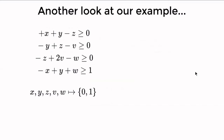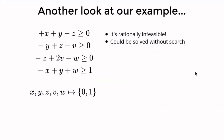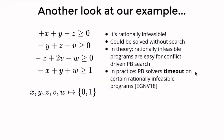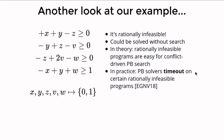The example is not only unsatisfiable over zero-one, but it also does not allow rational solutions. If one were to run an LP solver, no search would even be needed. In theory the conflict learning mechanisms are powerful enough to derive this rational infeasibility, but in practice PB solvers time out on certain rationally infeasible instances. So why not integrate an LP solver in the conflict-driven search loop? That is the focus of our work.